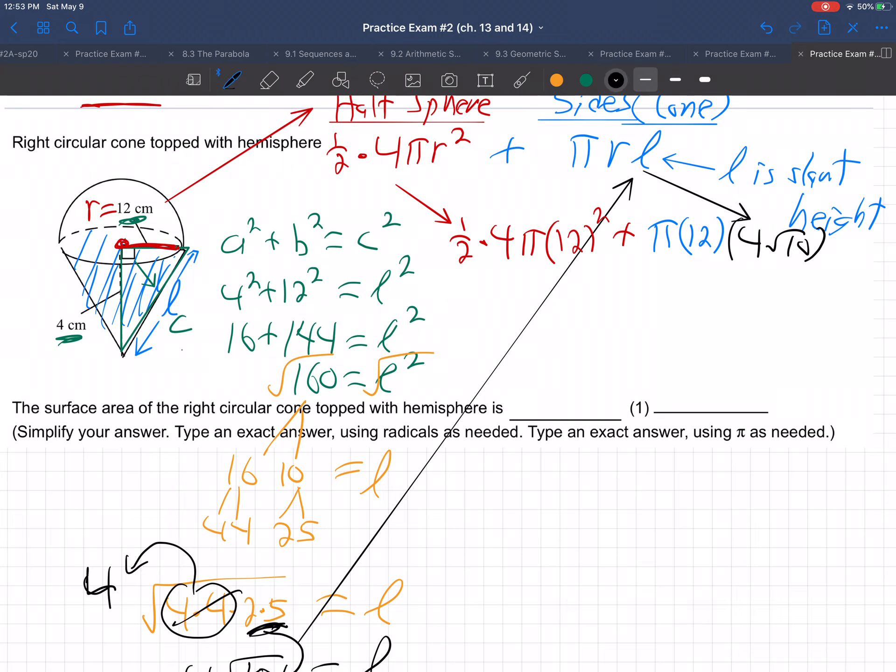This part, 1/2 times 4 times 12², it's going to be just 2 times 12², is 288. So 288π plus, and then this other part, 12 times 4, that's 48, and then the √10, and then the π.